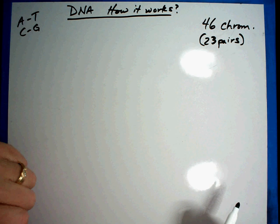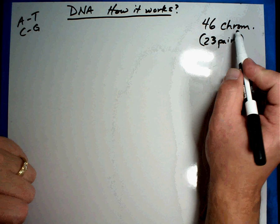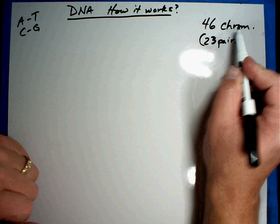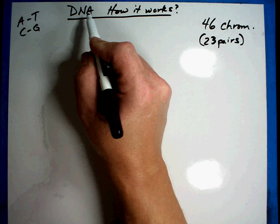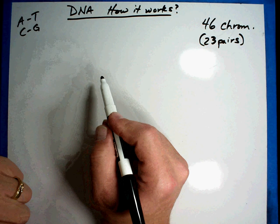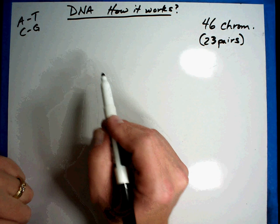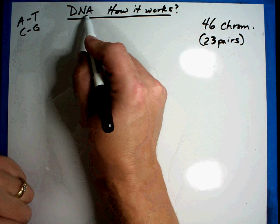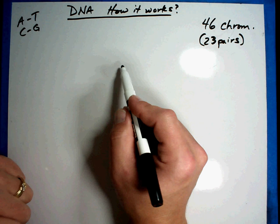But the problem with DNA for a long time was we understood there were chromosomes, but the DNA - a bunch of A's, T's, C's and G's - was a secret code that we didn't know what it meant. So we're going to talk about how DNA works in the cell and how it makes the cell do what we need it to do.